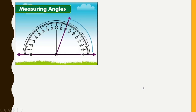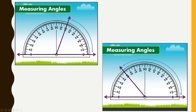In this example, the ray is going towards the right side, so 0 is on the inner scale and we measure using the inner scale: 0, 10, 20, 30, 40, 50, 60, 70 degrees — the measure of this angle is 70 degrees.